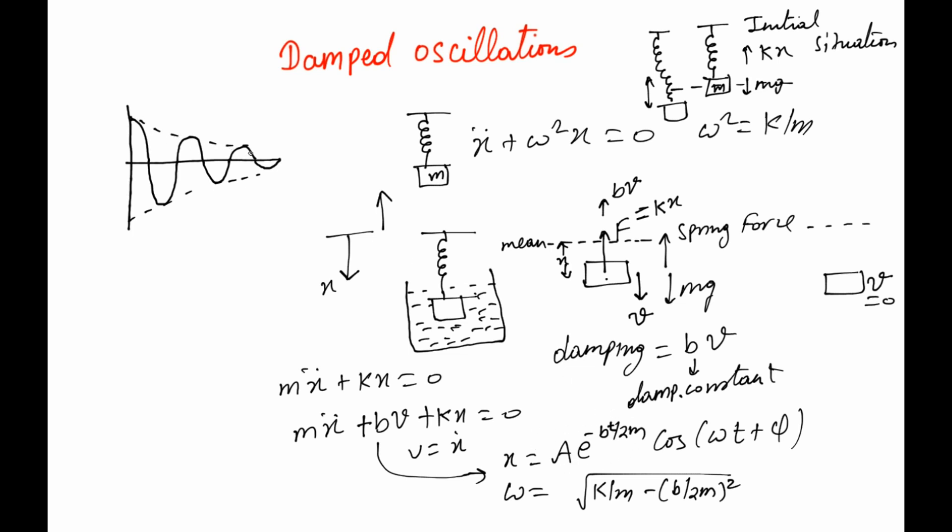So this whole product actually becomes smaller and smaller as we move in time. The amplitude keeps on becoming smaller and smaller, and the cosine still remains cosine with the same omega. The omega is still constant, which means the time period is still constant.